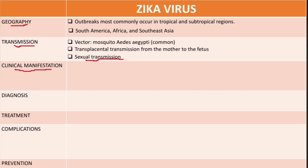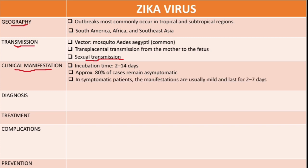The incubation period is 2 to 14 days, and approximately 80% of cases are asymptomatic. When symptoms do occur, they are usually mild and last 2 to 7 days, including low-grade fever, flu-like symptoms such as myalgia and arthralgia, non-purulent conjunctivitis, and a maculopapular rash which is pruritic in about 20% of cases.